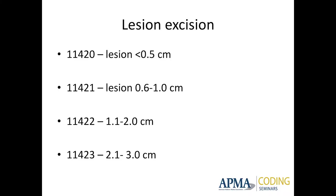Lesion excision codes are based on size — location is irrelevant. These are codes for anywhere in the body, strictly based on size. Less than 0.5 cm, 0.6 to 1, 1.1 to 2, 2.1 to 3 — most of ours are going to fall into 11420 and 11421. Typically we're not excising lesions much bigger than one centimeter.